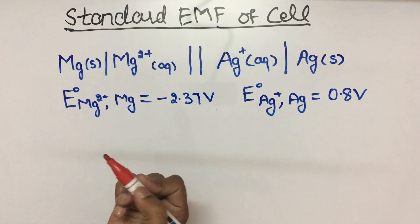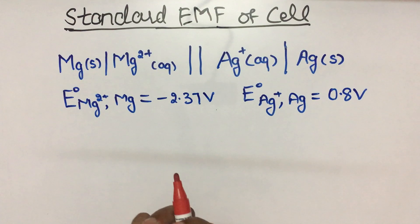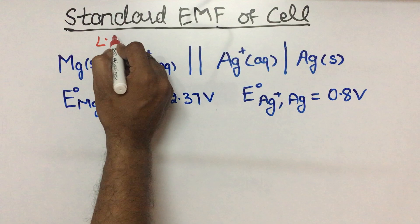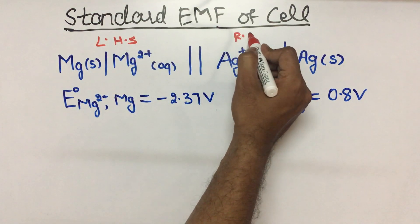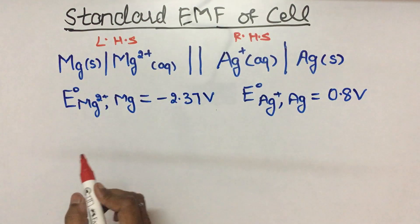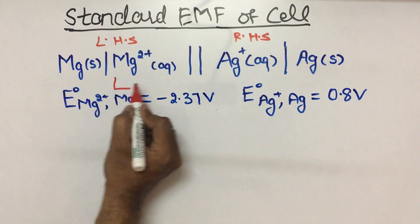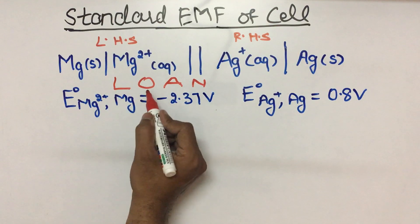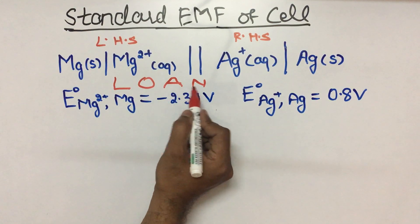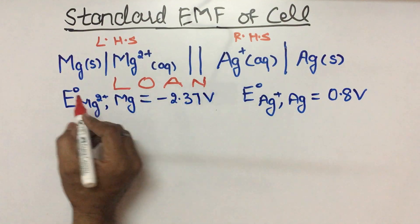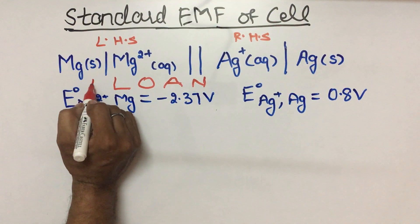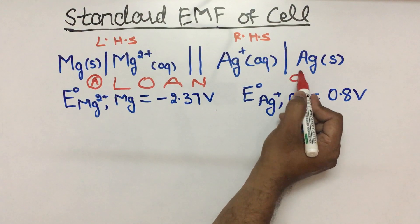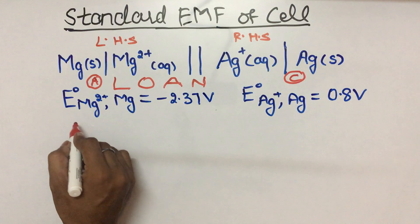If you observe this cell, this part is the left hand side and this part is the right hand side. You can learn the word LOAN — Left hand side, whatever metal is written, undergoes Oxidation and it's the Anode, and its sign is Negative. So your left hand side is anode, and right hand side is cathode.